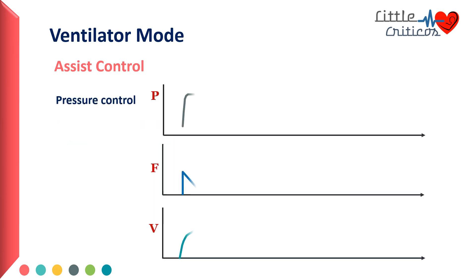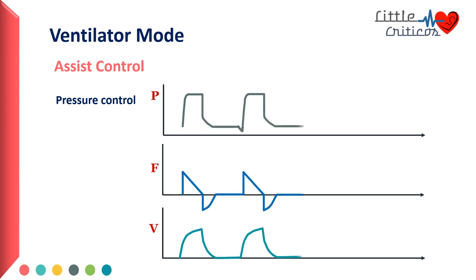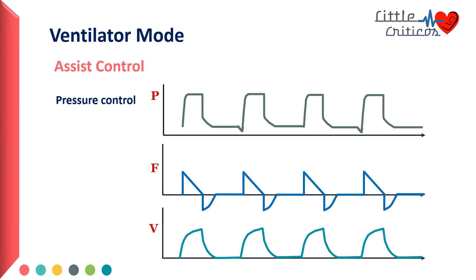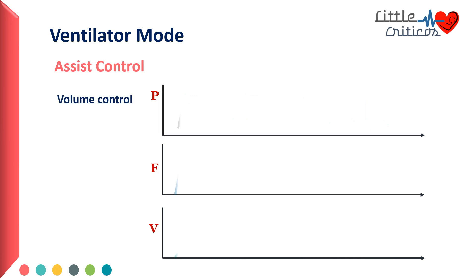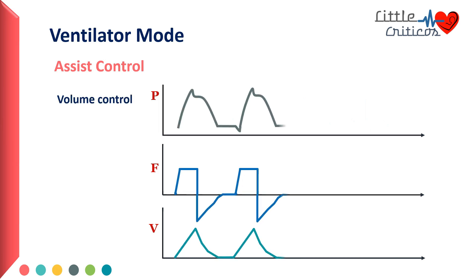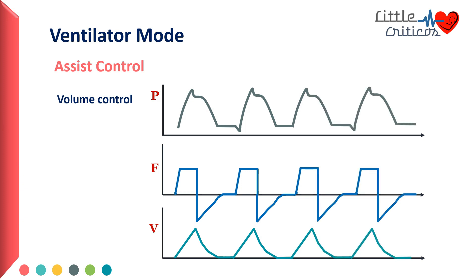In the graphical representation, the pressure time scalar shows that both time-triggered and patient-triggered breaths are allowed in assist control mode of ventilation. The rest of the variables remain similar for both patient-triggered and time-triggered breaths, and all breaths are time-cycled. The same can be appreciated in volume control breaths as well, where every alternate breath is patient-triggered and all breaths are time-cycled.